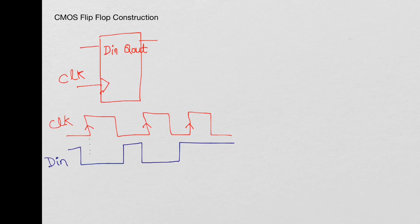At every rising edge, it looks at what is the state of DIN and then puts that on the output. Assume that DIN was high and Qout was high initially. At the first rising edge of the clock, it sees that DIN is low, so it goes low. At the second rising edge, it sees that DIN is still low, so it remains low. At the third rising edge, it sees that DIN is high, so it goes high. This is Qout.